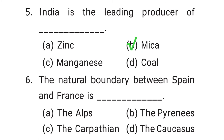The sixth question is: the natural boundary between Spain and France is — the Alps, the Pyrenees, the Carpathian, or the Caucasus? The correct answer is option B, the Pyrenees.